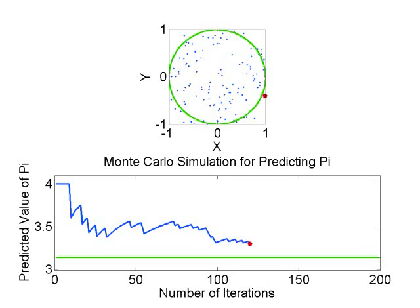Then on the graph below, you see the predicted value of pi as a function of the number of random tosses. The blue line is the predicted value, while the green line is the actual value of pi, 3.14, etc.